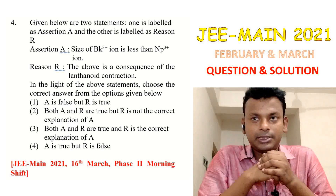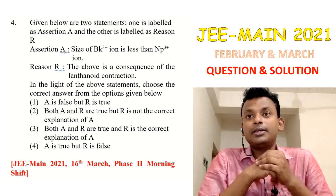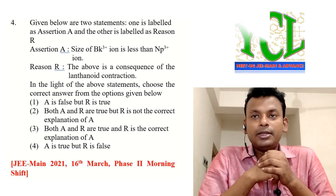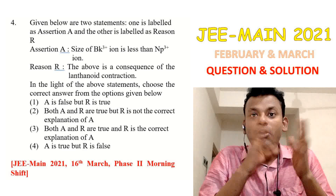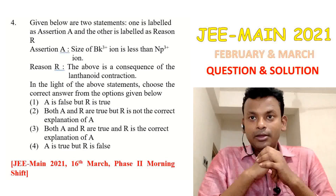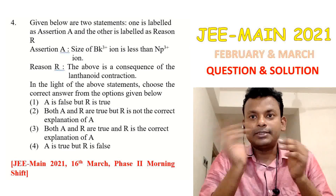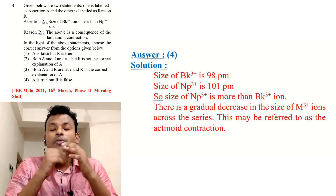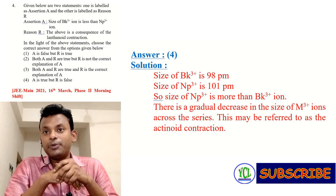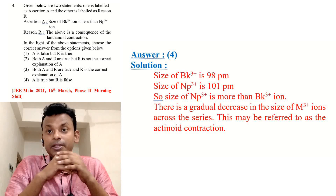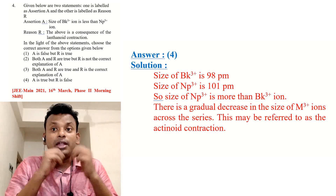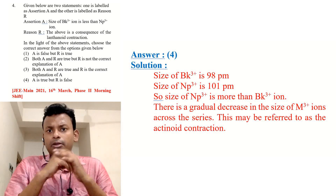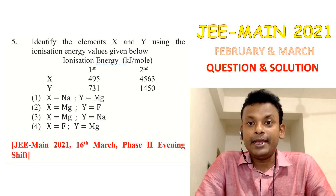Question 4 is an Assertion-Reason question. Assertion A: The size of Bk³⁺ ion is less than Np³⁺ ion. Reason R: The above is a consequence of lanthanide contraction. Options are given. This question was set in JEE Main 2021, 16th March, page 2, morning shift. Answer is option 4 — assertion is true but reason is false. Size of Bk³⁺ is 98 pm and Np³⁺ is 101 pm. The gradual decrease in size across the series should be referred to as actinide contraction.